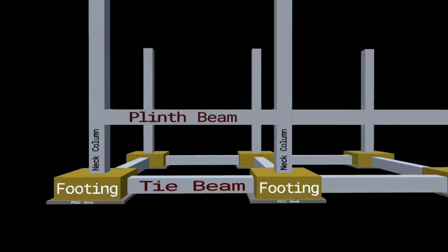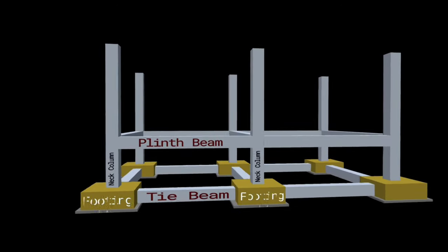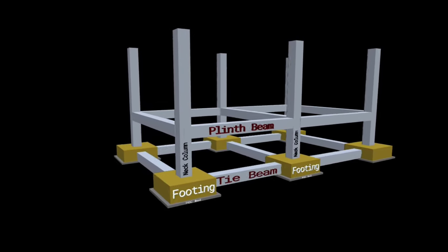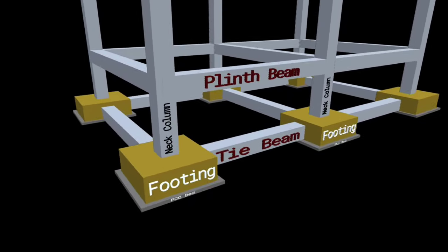Tie beams are provided both in superstructure as well as in substructure. These are mainly provided in roof truss and at plinth level and footing level.